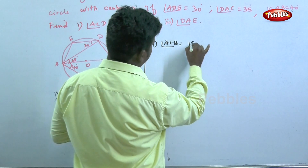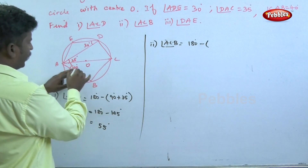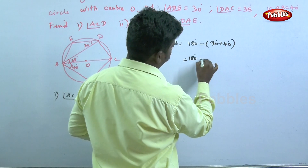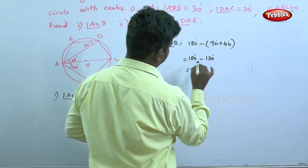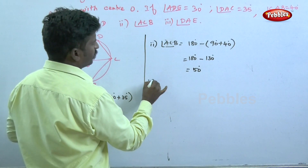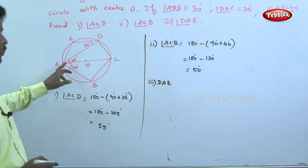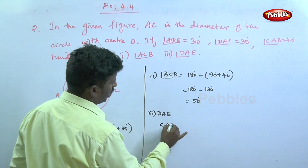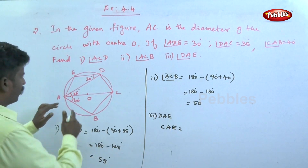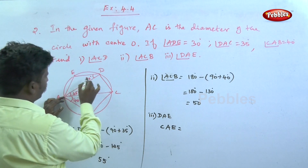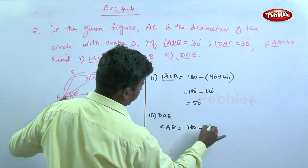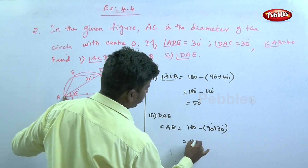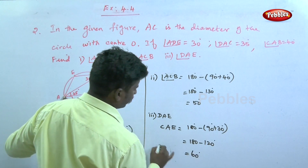For the second angle: ACD is equal to 180 degrees minus 90 degrees plus CAB which is 40 degrees, giving 180 minus 130 degrees equal to 50 degrees. Next we need to find angle DAE. The angle CAE: using the property, 180 degrees minus 90 plus 30 degrees gives 180 minus 120 equals 60 degrees. This is angle CAE.